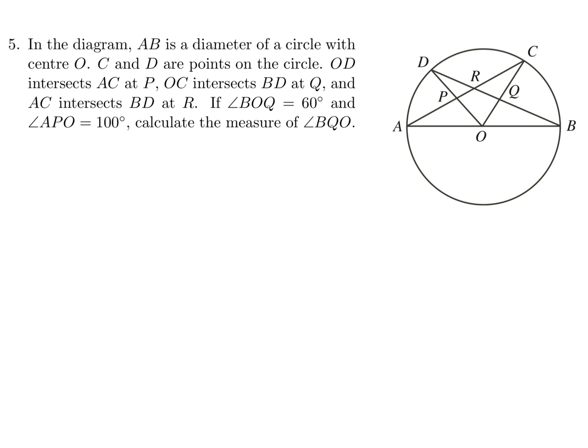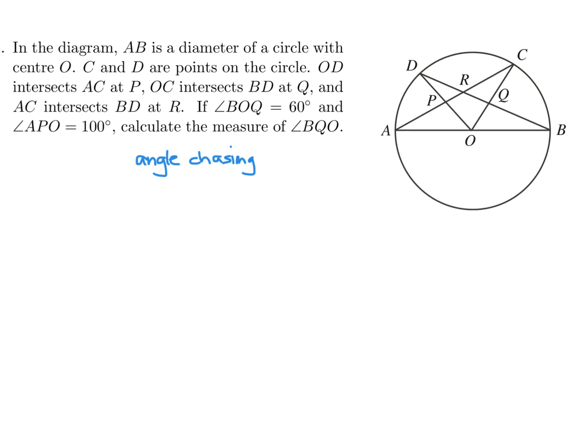In the diagram, AB is a diameter of a circle with center O. C and D are points on the circle. OD intersects AC at P, OC intersects BD at Q, and AC intersects BD at R. If angle BOQ is 60 degrees and angle APO is 100 degrees, calculate the measure of angle BQO. Alright, so this is what you call angle chasing. Let's start labeling this.